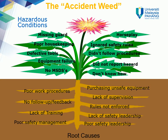Examples of hazardous conditions include missing guards, poor housekeeping, defective tools, equipment failure, no material safety data sheets, poor work procedures, no follow-up or feedback, lack of training, poor safety management. Examples of poor hazardous practices include horseplay, ignoring safety rules, not following procedures, failing to report hazards, purchasing unsafe equipment, lack of supervision, rules not enforced, and poor safety leadership.